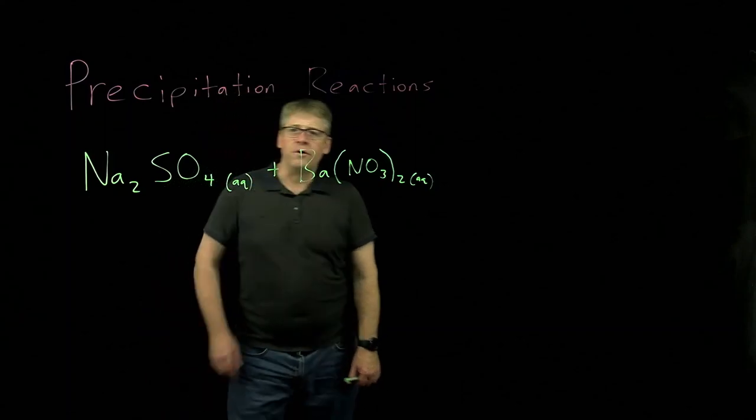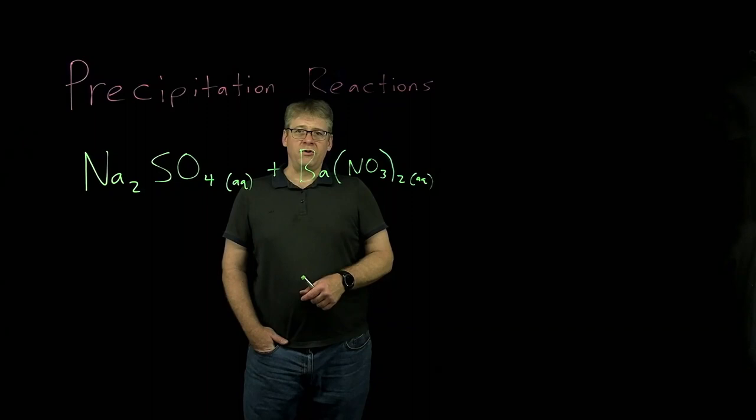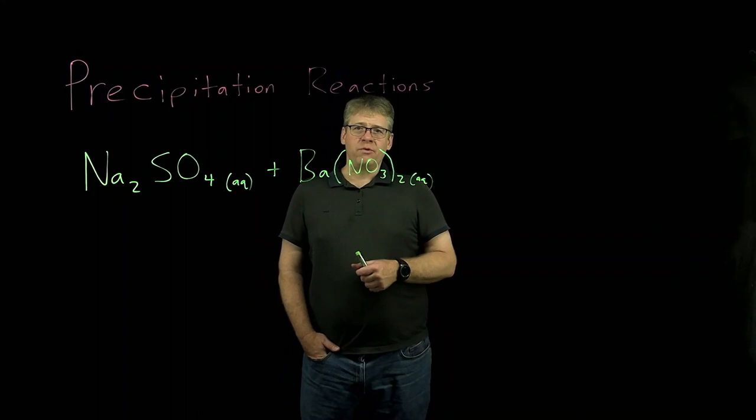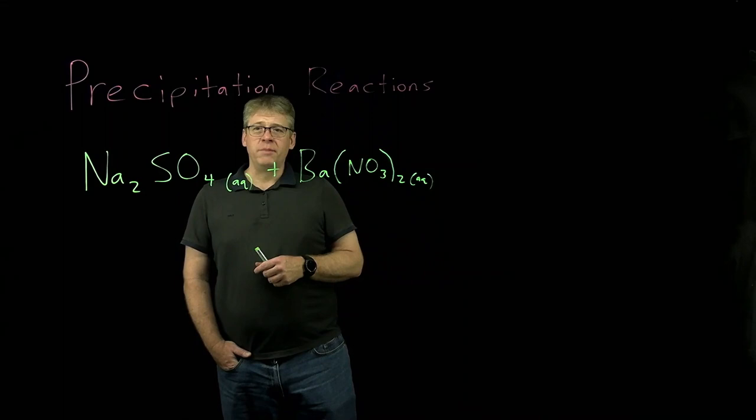Hello folks, time to talk about a new reaction type: precipitation reactions. The rule with a precipitation reaction is we take two electrolyte reactants and when they react they have to make at least one non-electrolyte product. For our purposes we're going to identify electrolytes or non-electrolytes using a solubility table like the one in your notebook.